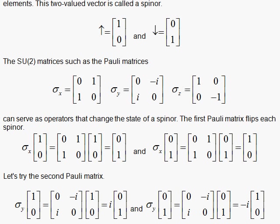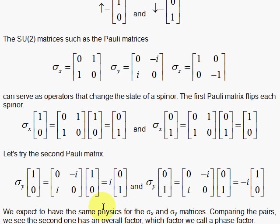What about sigma sub Y? Sigma sub Y is 0 minus i, i is 0, and the up state is the 1, 0. 0 times 1 plus minus i times 0 is 0. i times 1 plus 0 times 0 is i, and I bring the i out, factor it out. Sigma Y acting on the down state, 0 times 0 plus negative i times 1 is negative i. I bring it out. i times 0 plus 0 times 1 is 0.